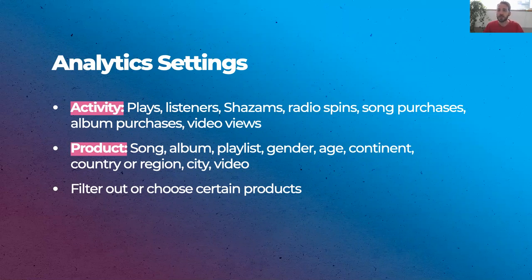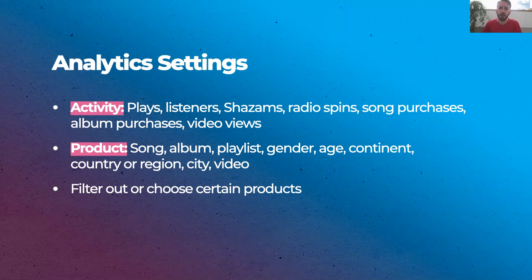There are song, album, playlist, gender, age, continent, country or region, city, or video — any of these. You can also choose if you want to filter out certain products. For example, if you're looking at plays by song, you can choose whether to analyze all songs, a few specific songs, or just one.